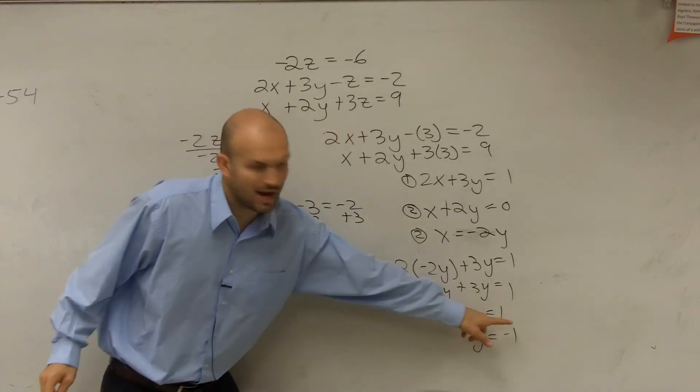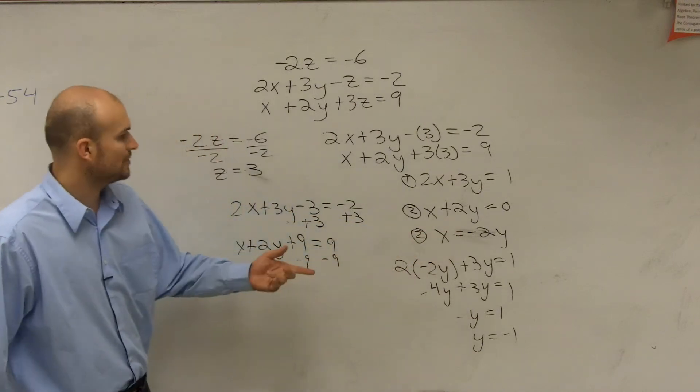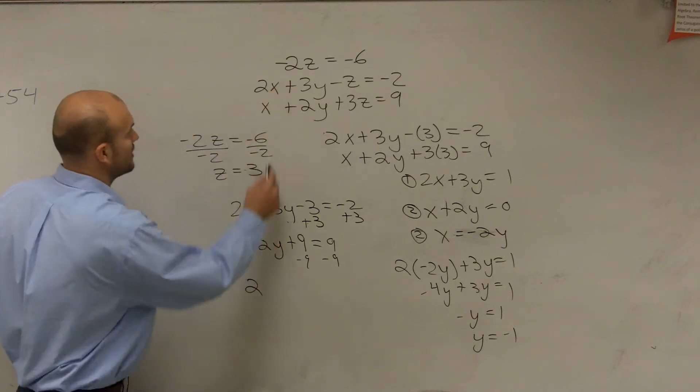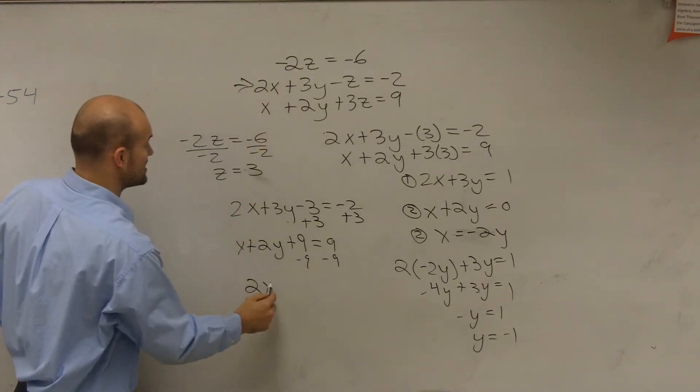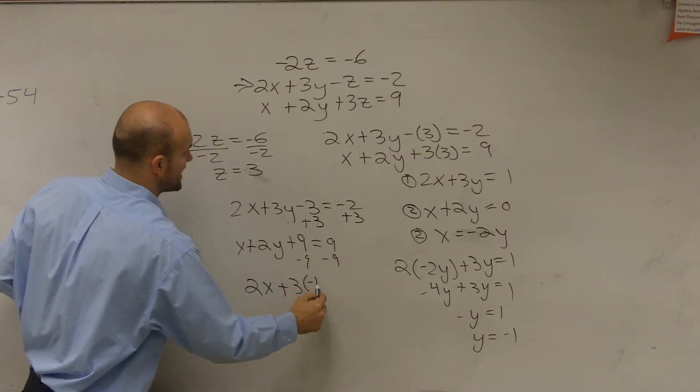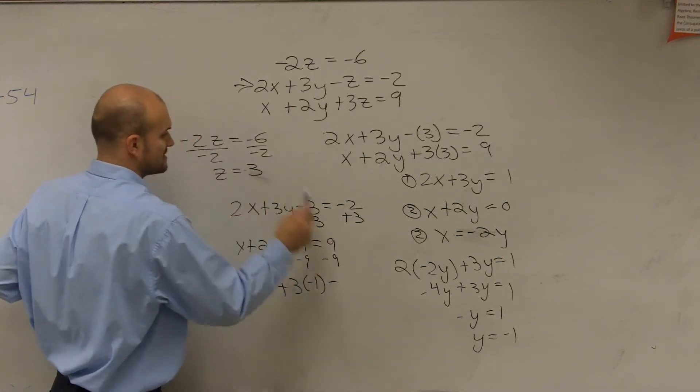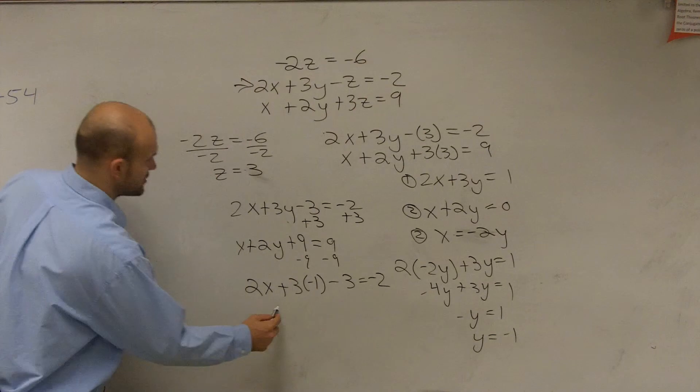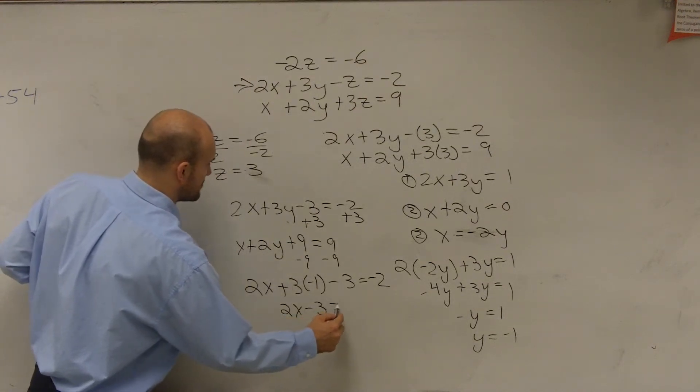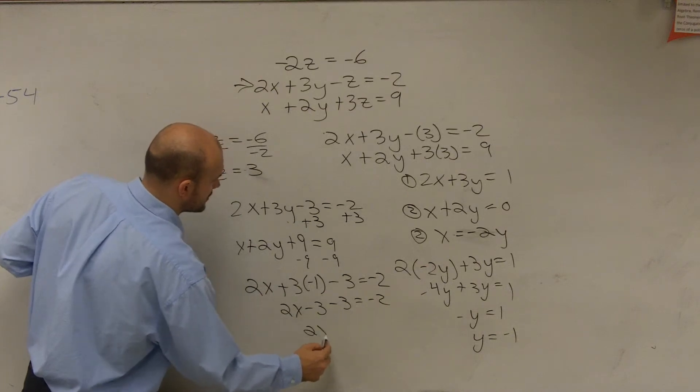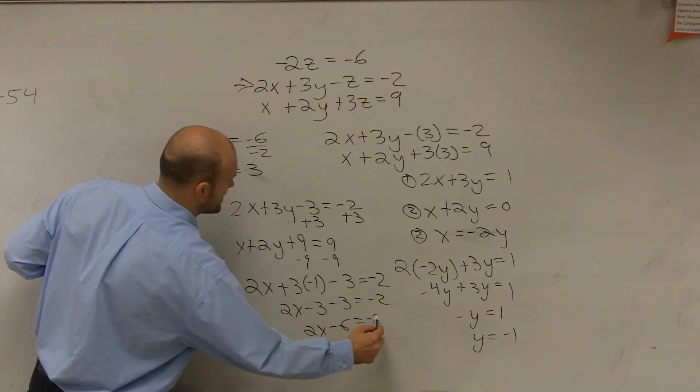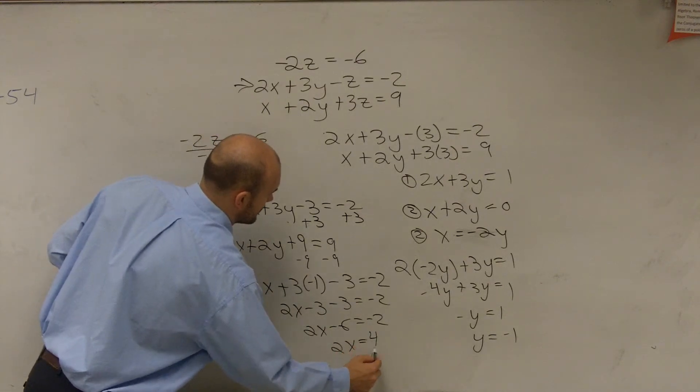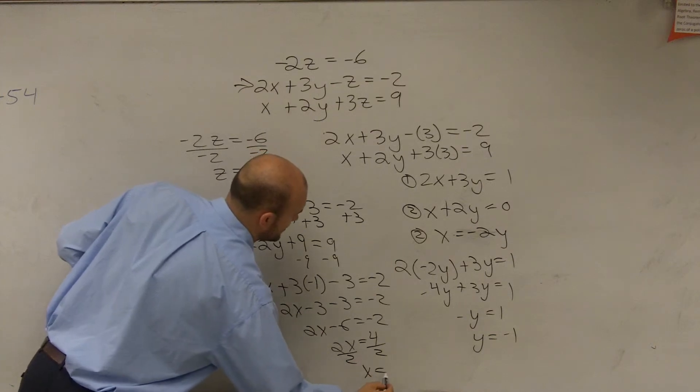So now I know what y equals negative 1. I know x, I don't know what x equals yet. But I know z equals 3. So to find the value of x, I could take one of these equations, which I'll take this one. So I take 2 times x plus 3 times negative 1 minus z, which is 3, and that equals negative 2. So therefore, I get 2x minus 3 minus 3 equals negative 2. 2x minus 6 equals negative 2. Add 6. I'm going to get a positive 4. Divide by 2. x equals 2.